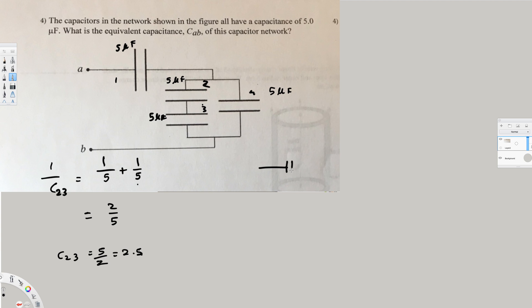Now if I add them together, the new diagram is going to look like this: we have 2.5 here and then 5 on the other side. If you notice, these two are in parallel.